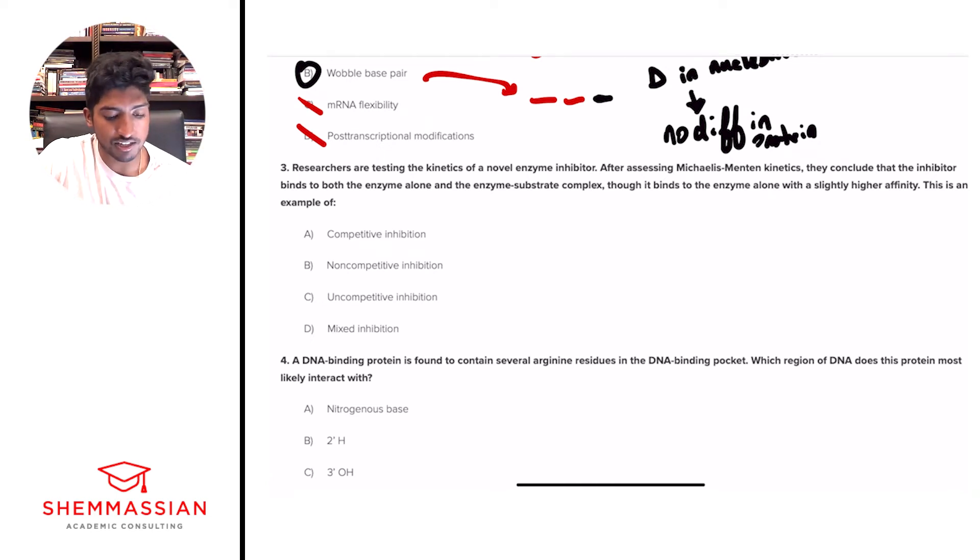And so with that, we'll go on to question number three. Researchers are testing the kinetics of a novel enzyme inhibitor. After assessing Michaelis-Menten kinetics, they conclude that the inhibitor binds to both the enzyme alone and the enzyme substrate complex, though it binds the enzyme alone with a slightly higher affinity. This is an example of what? A, competitive inhibition. B, non-competitive inhibition. C, uncompetitive inhibition. Or D, mixed inhibition.